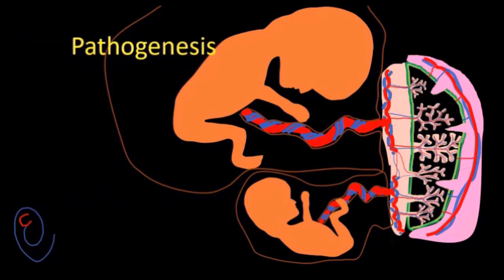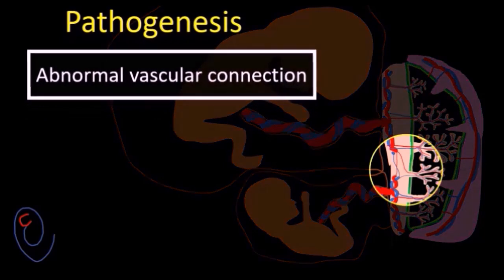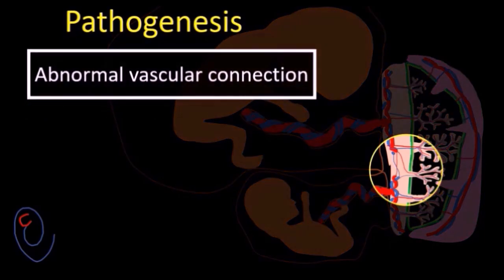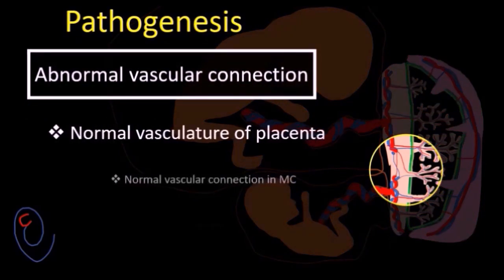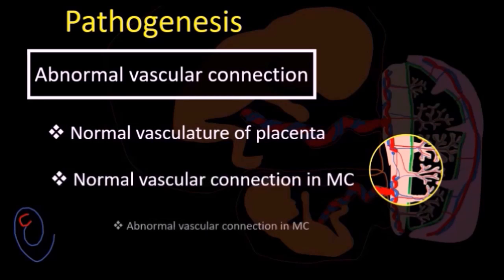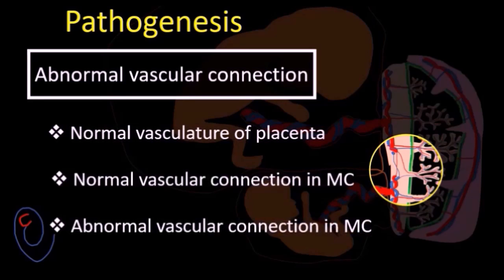Firstly, regarding the pathogenesis, this happens due to abnormal vascular connection. And to understand the meaning of abnormal vascular connection, I will describe the normal vasculature of the placenta, what is the normal vascular connection in monochorionic twins, and when these connections are considered abnormal.